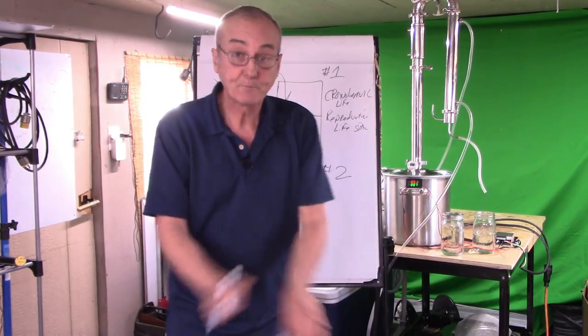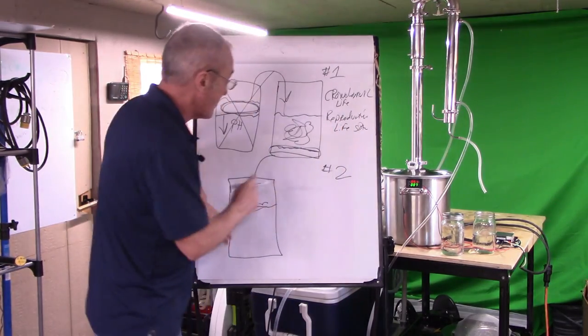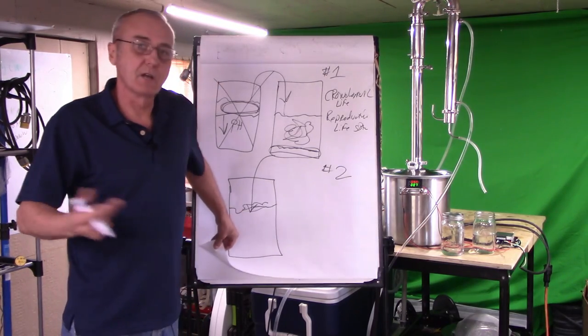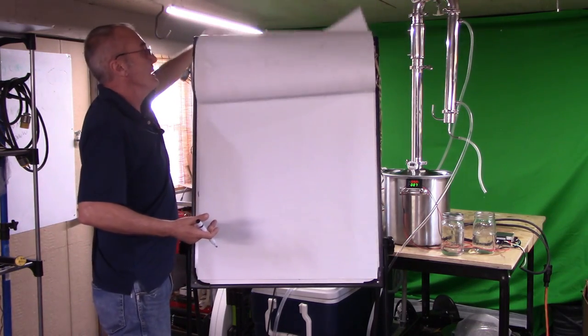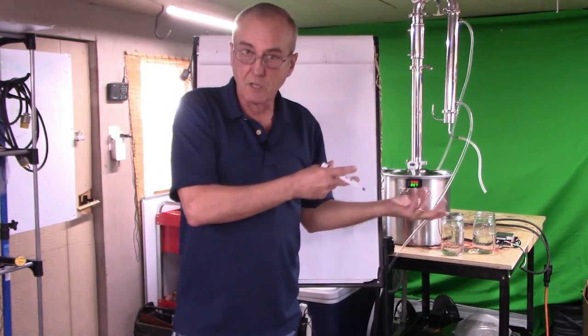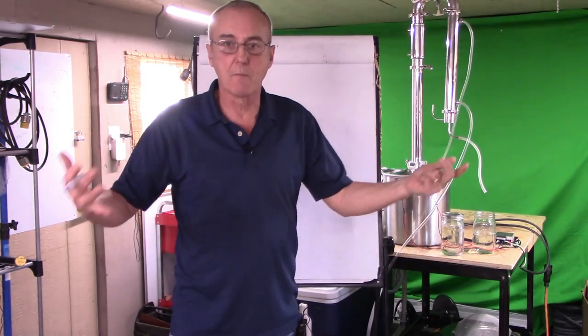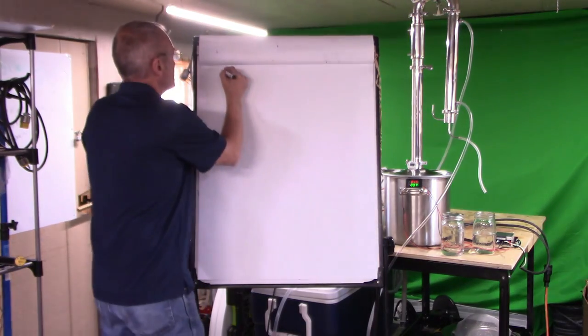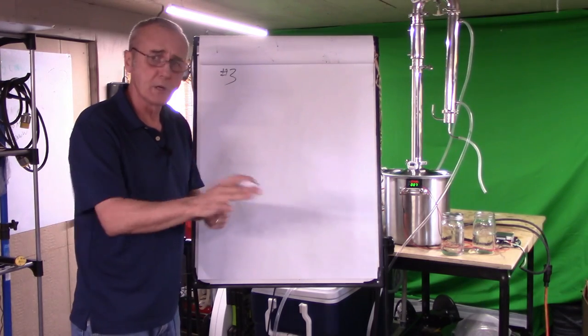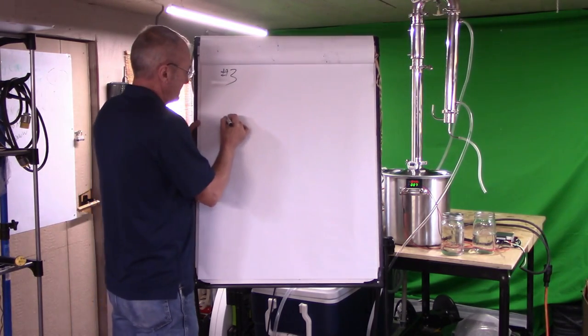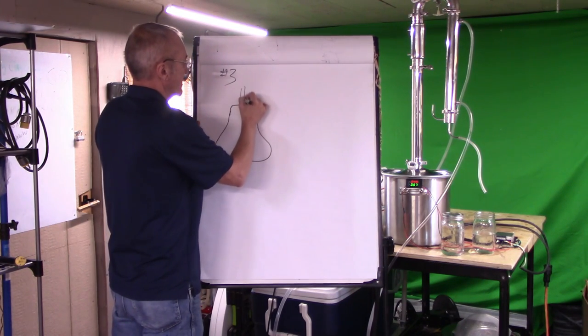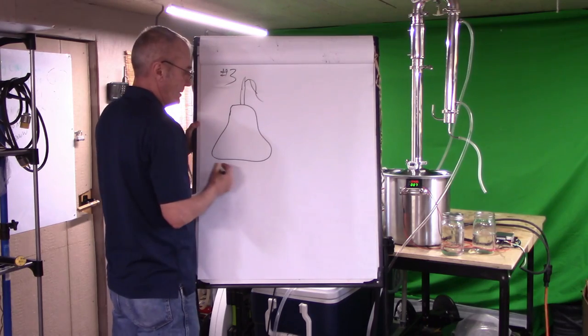Now the third way of making a sour mash, and this one's actually a controlled method, and it's used by many, many distillers and distilleries in order to make a sour mash, and it's the most popular, and this one's number three. And this is more, again, more in line with your commercial distiller, or you can do it at home too. Here, this is our still. We're just going to draw something like that. There's our column, our evaporator and all that stuff.